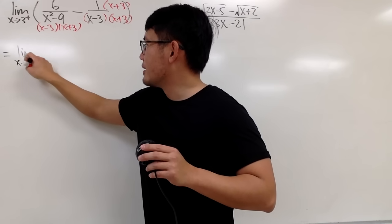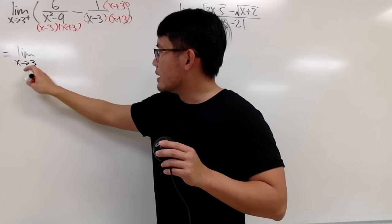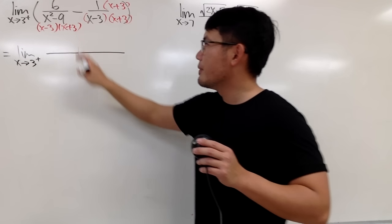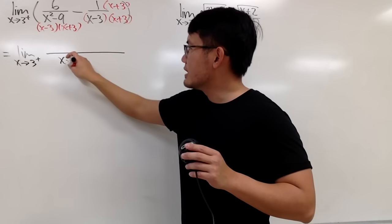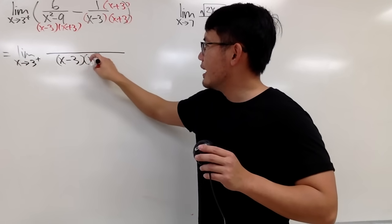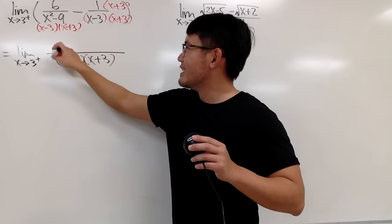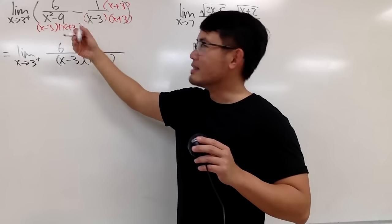Be sure you write down the limit again right here. The limit as x approaching 3 plus, and now we're going to just put everything together. The denominator is x minus 3 times x plus 3. And for the top, we have 6. And then right here, this is the minus.